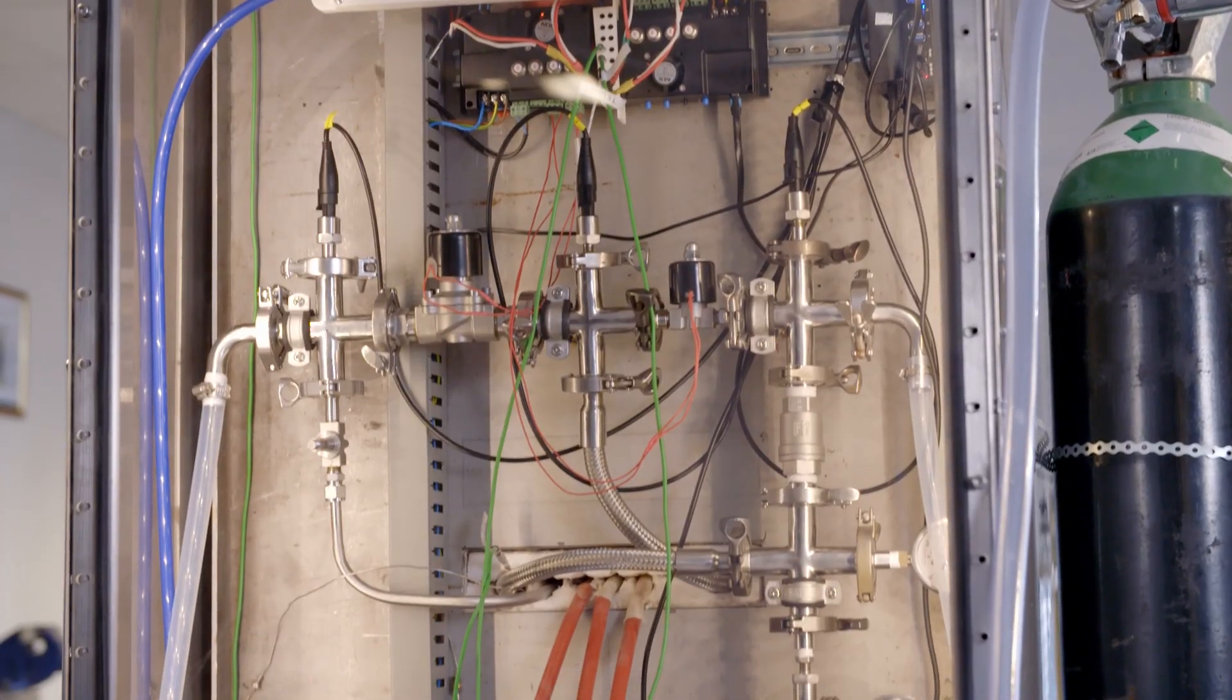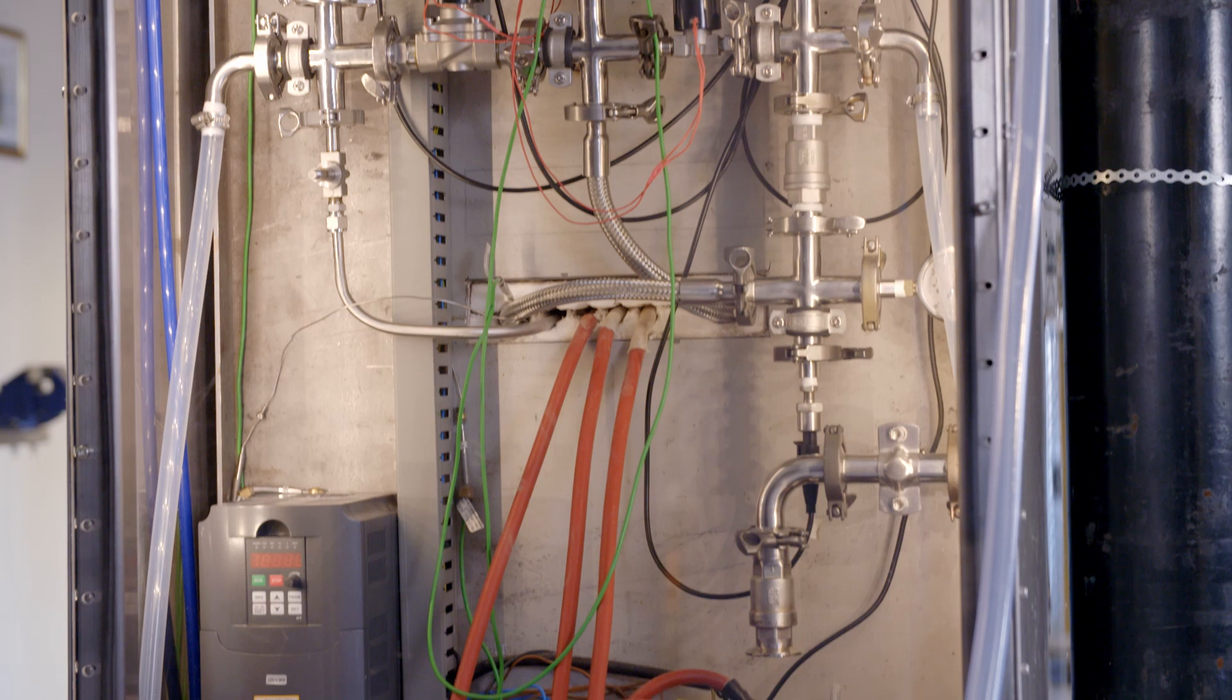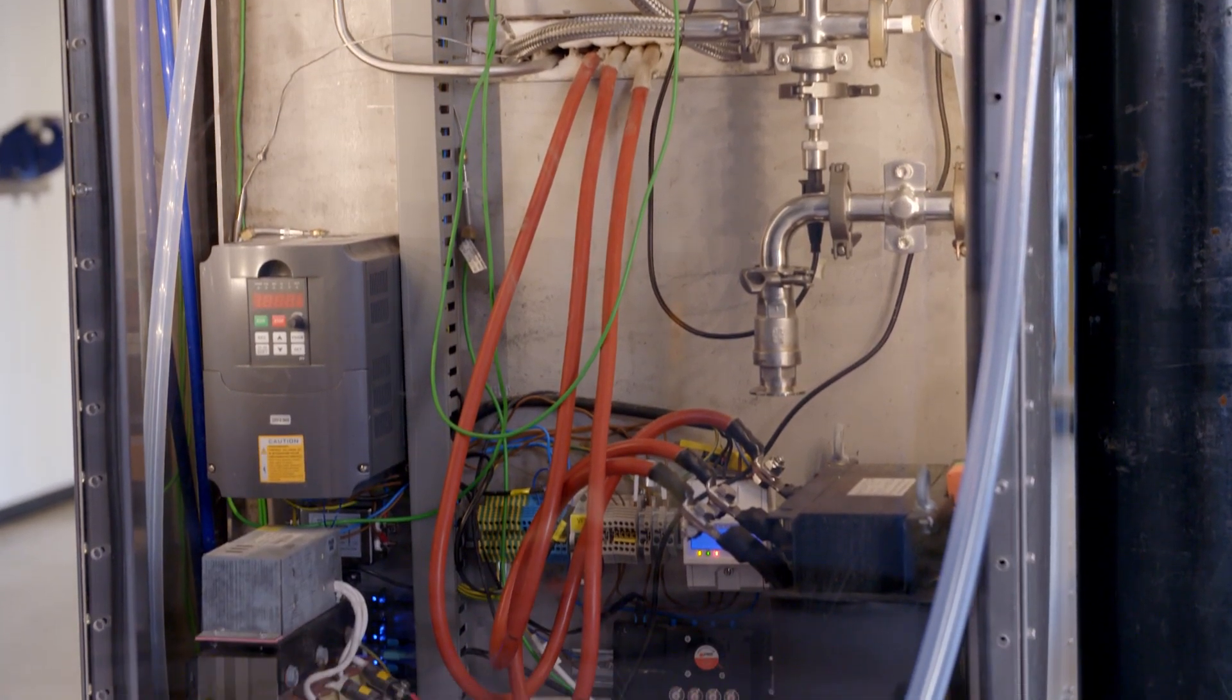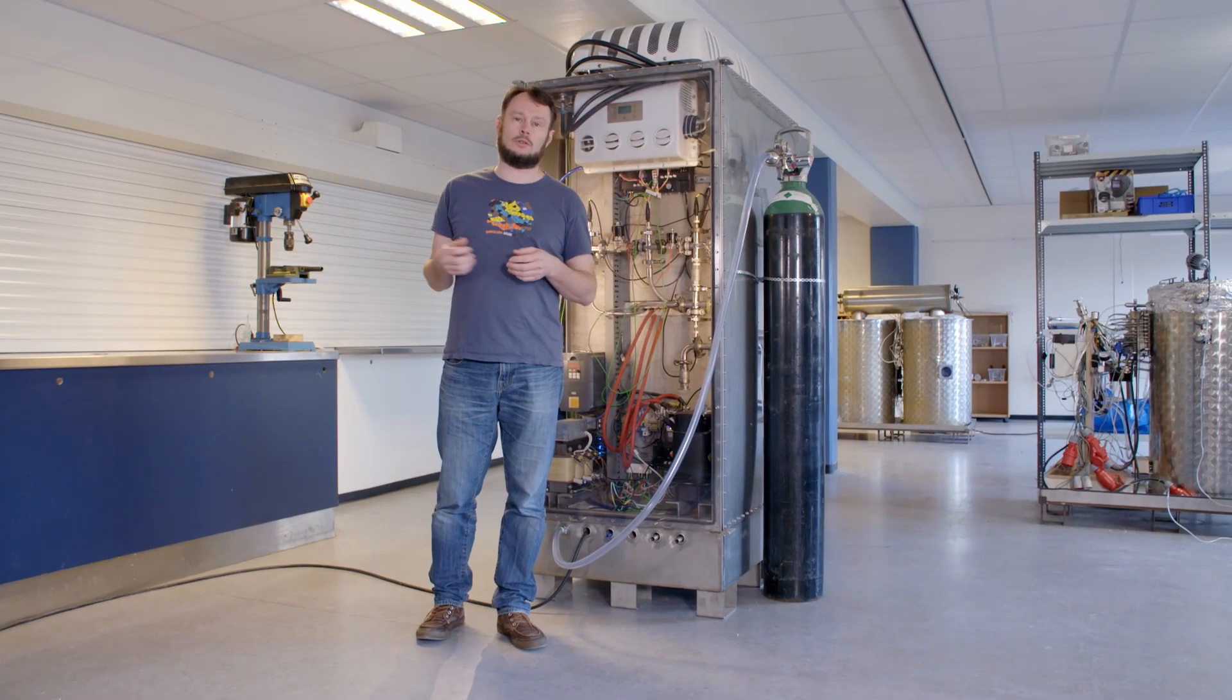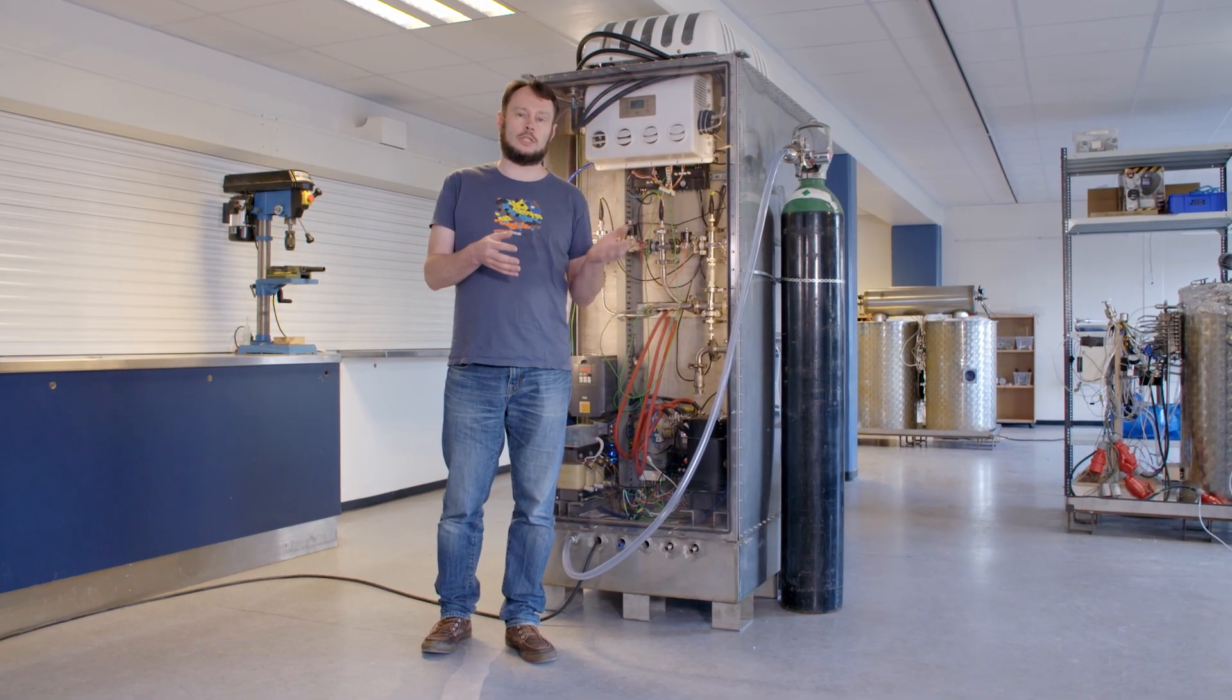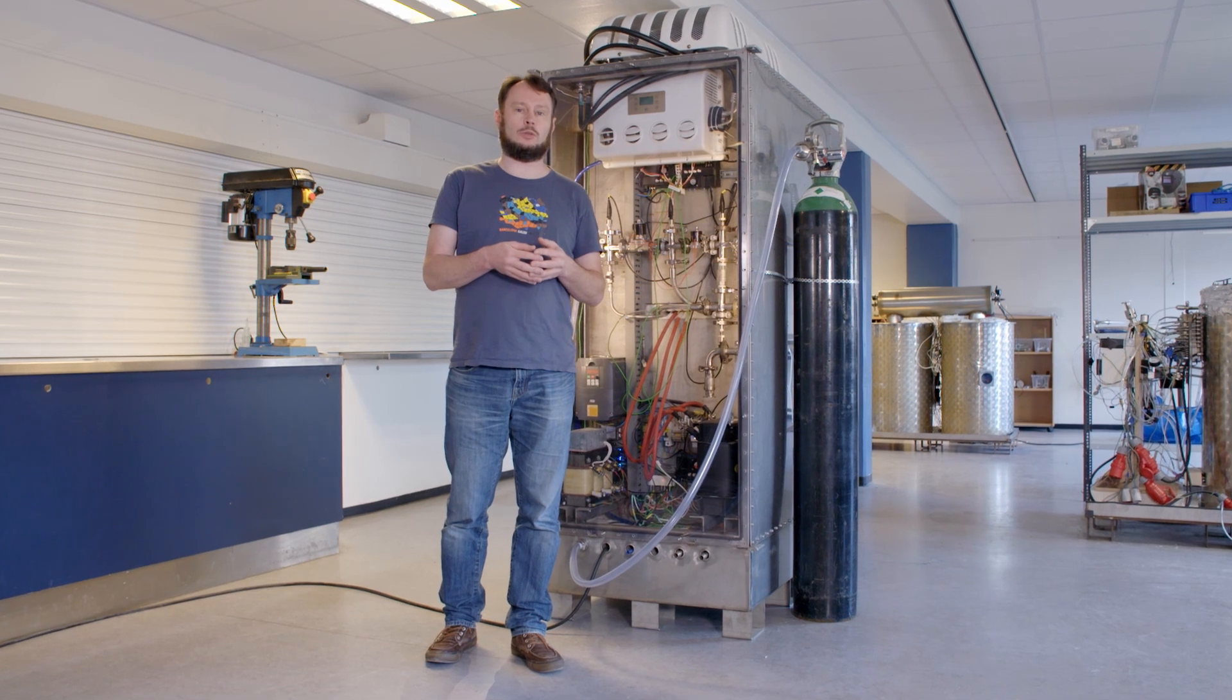This loop also allows you to customize the piping outside of the furnace and you can connect external equipment under test. Or you can route the pipes into an external glove box, for example, where you can do experiments directly on flowing molten salt.